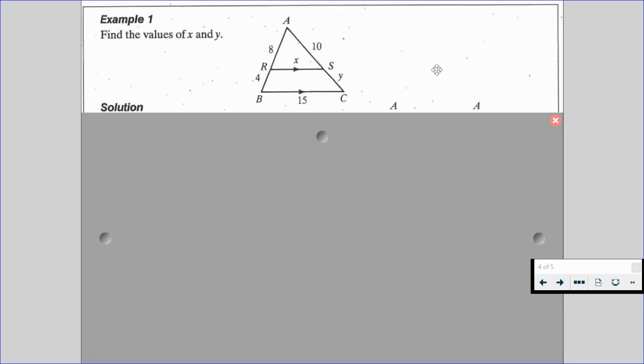In example number one, we are given the current diagram. We have an outside triangle ABC, an interior triangle, or an inside triangle ARS. We're given that RS is parallel to BC, and we're given different values alongside the triangles.